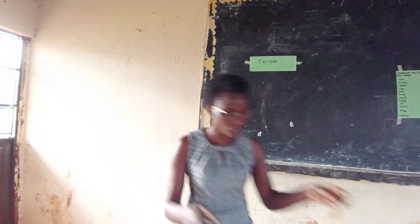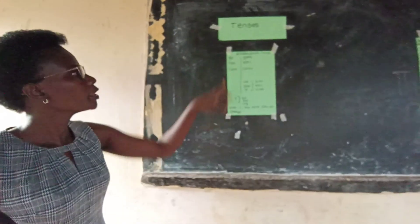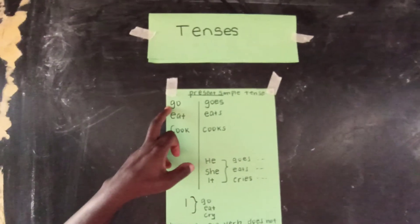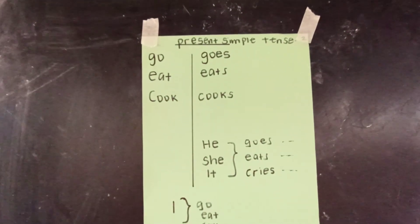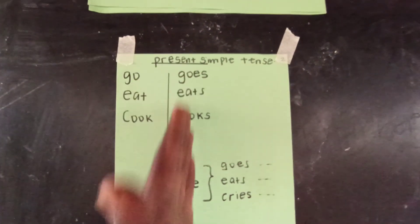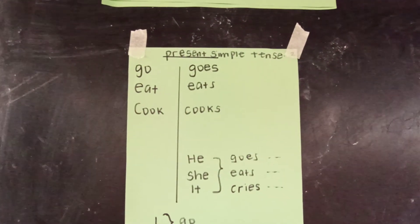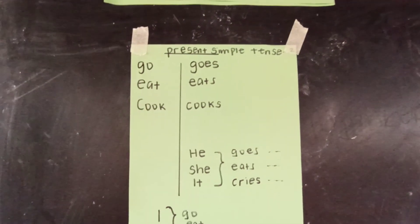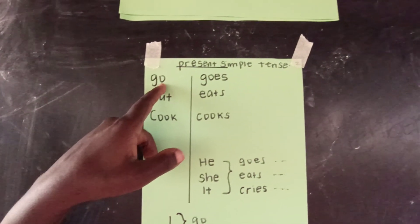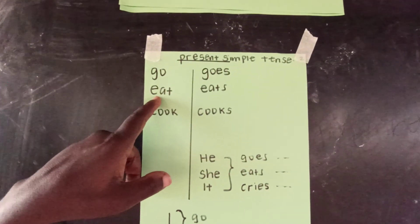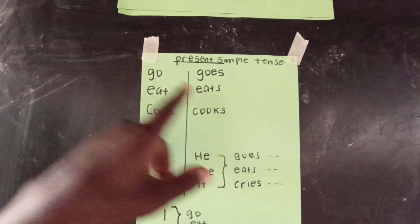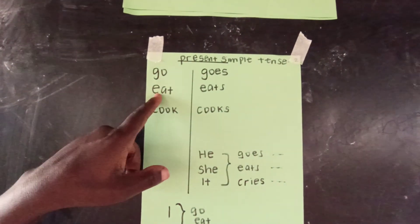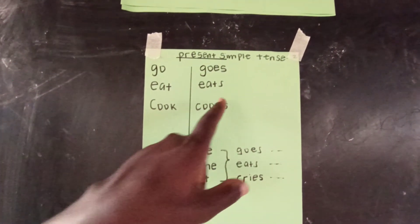Are we together? We have many examples here. Let's look at them. We have 'go' — add ES, it becomes 'goes.' 'Eat' — only add S, it becomes 'eats.' And 'cook' — we only add S, and it becomes 'cooks.' Go, goes. Eat, eats. Cook, cooks. For example, I can say: he goes to school every day. She eats food every lunch. It cries every morning. They keep on taking place.